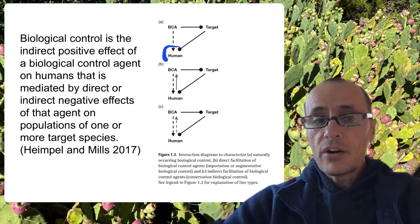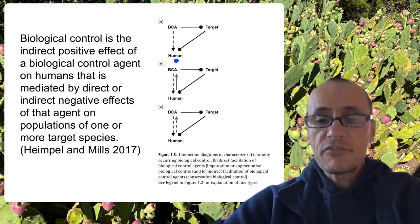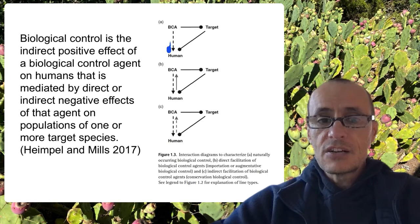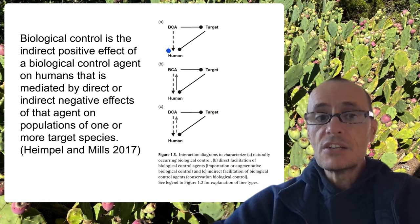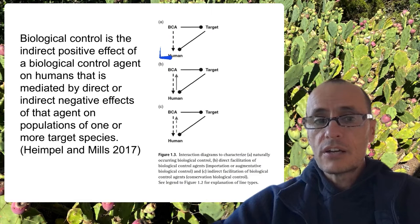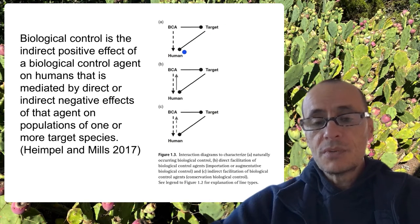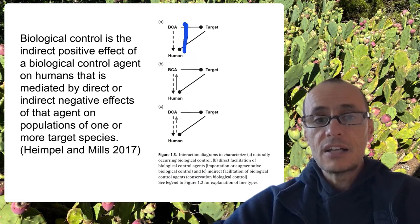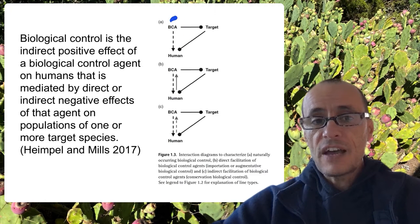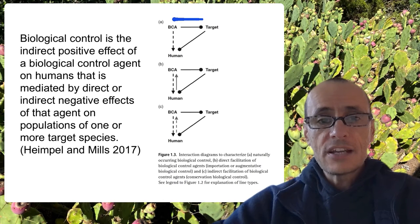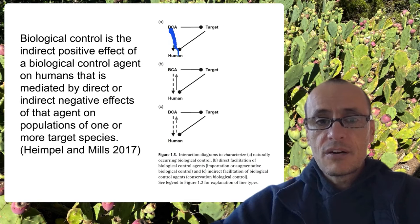So humans are part of this equation — we're the ones that benefit from the effect of a biological control agent. This dotted line indicates a positive indirect effect of the biological control agent on humans, mediated through an organism having a negative effect on humans — it's a pest, maybe even a pathogen. It's the negative effect of the biocontrol agent on the target that really matters. Back to the old adage: the enemy of my enemy is therefore my friend.